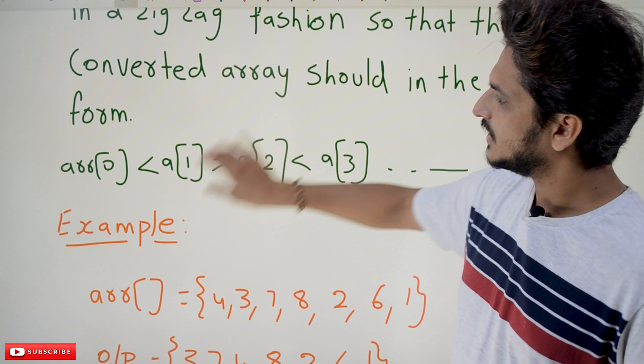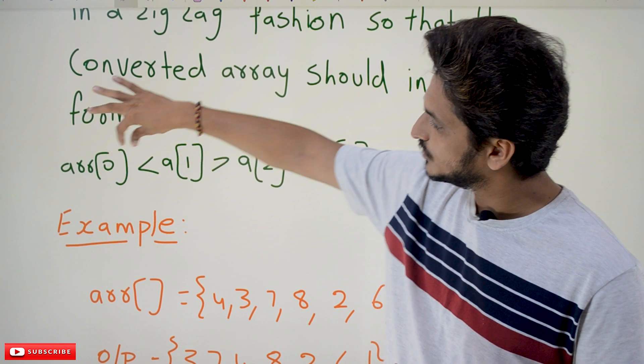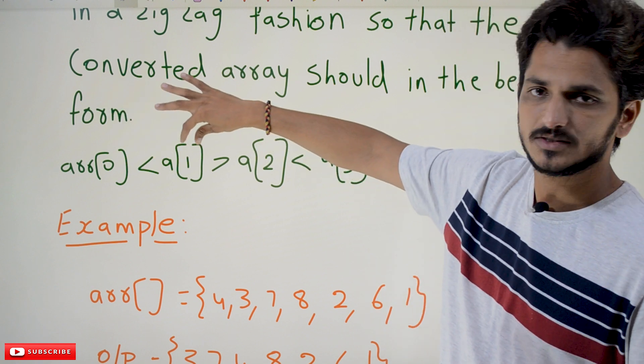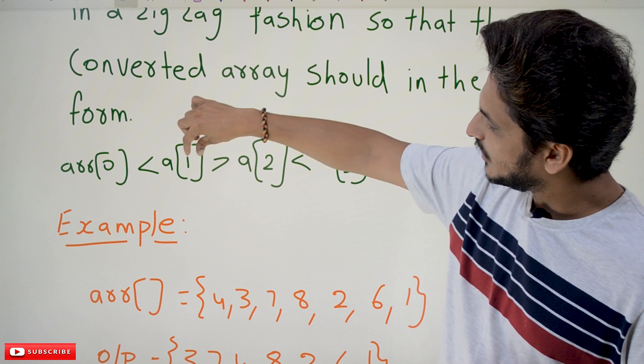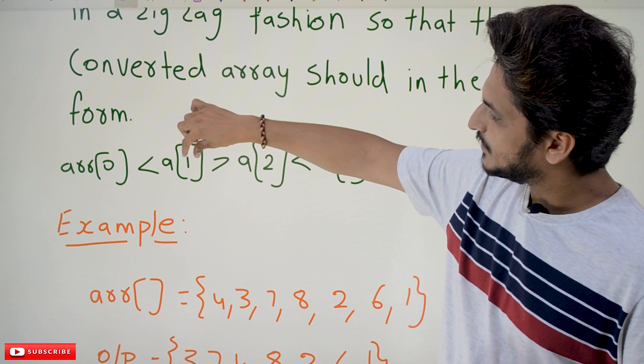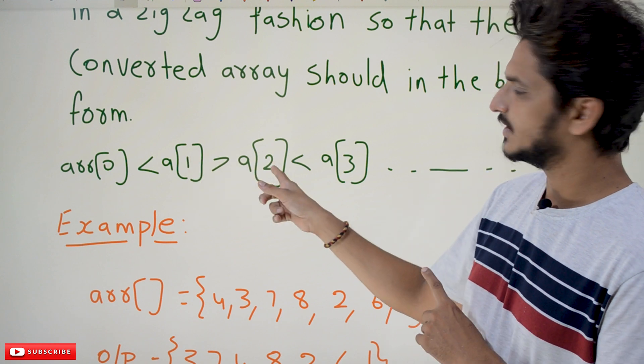The element present in the 0th position should be always less than the element present in the first position. Element present in the second position should be always less than element present in the first position. Means element present in the first position should be greater than element in the second position.